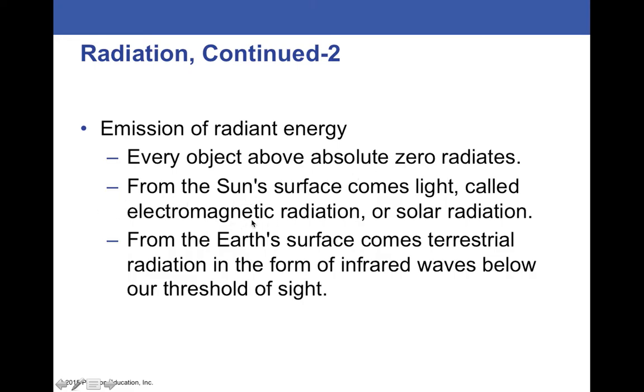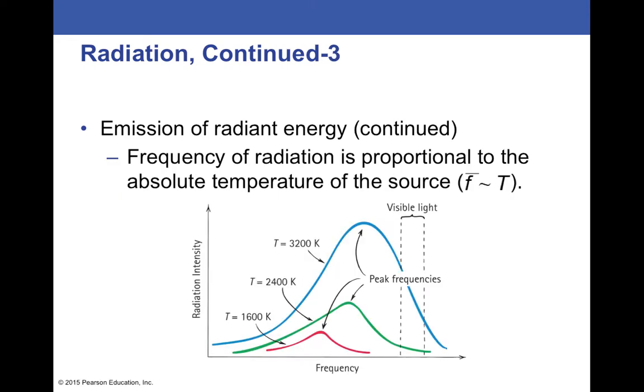And as I mentioned before, everything that has some kind of temperature radiates. The Sun's surface is so hot that you get visible light. And because the Earth is not as hot as the Sun, it emits a lower frequency infrared light. And we can't see that our eyes do not respond to that low frequency of electromagnetic radiation.